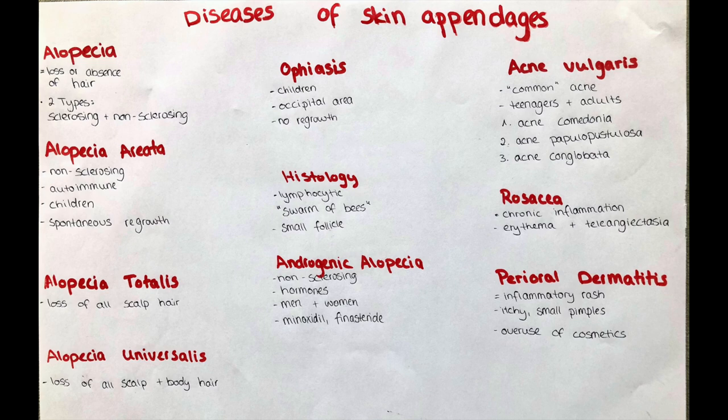First, alopecia. Alopecia is the loss or absence of hair in areas that usually have hair, especially on the scalp. There are generally two forms: the sclerosing type, which is irreversible — in this form the hair follicles are destroyed — and the second form, a non-scarring form, in which the hair follicles go into a sort of break called the telogen phase.